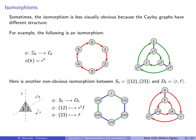Here is another non-obvious isomorphism: S3, the symmetric group on three elements of order 6 generated by transpositions (1 2) and (2 3), is isomorphic to D3, also of order 6, generated by R and F. D3 represents all rigid motions of a triangle — three rotations and three reflections. S3 represents all permutations of {1, 2, 3}. If we number the triangle's corners 1, 2, 3, every rigid motion represents a permutation and vice versa.